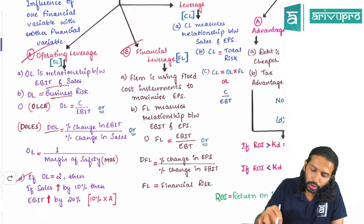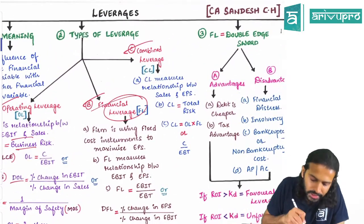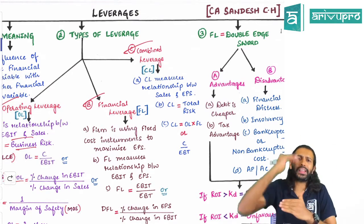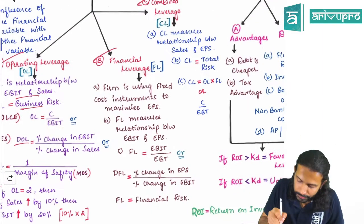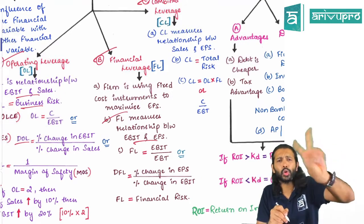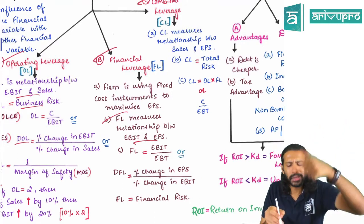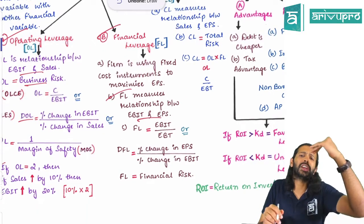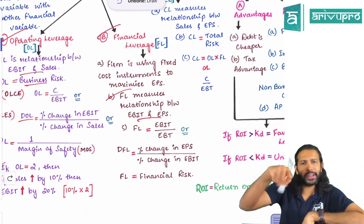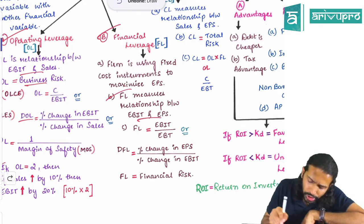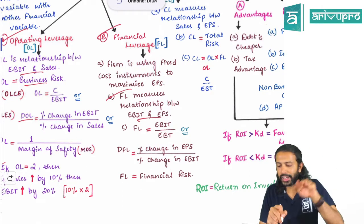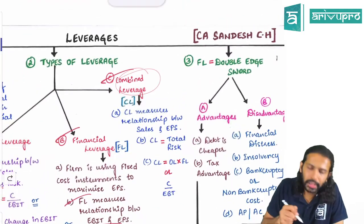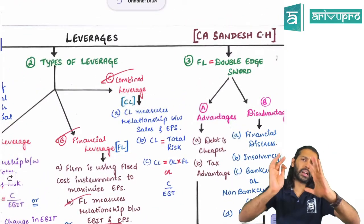Financial leverage measures the relationship between EBIT and EPS. It is calculated in two ways: EBIT divided by EBT, or percentage change in EPS divided by percentage change in EBIT. Financial leverage is also known as financial risk.